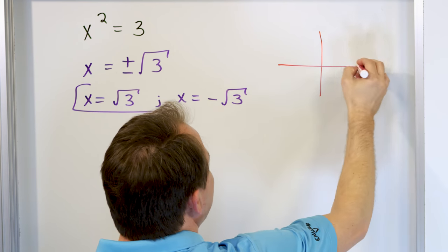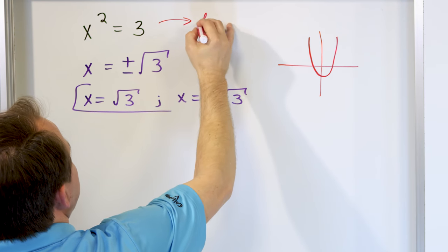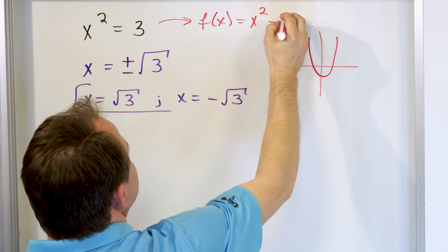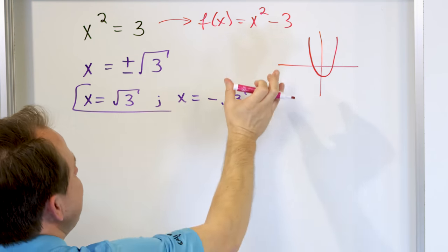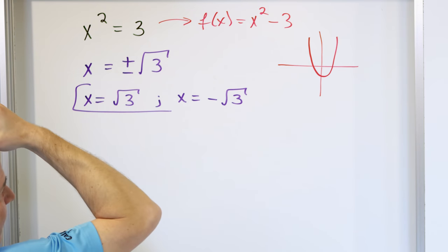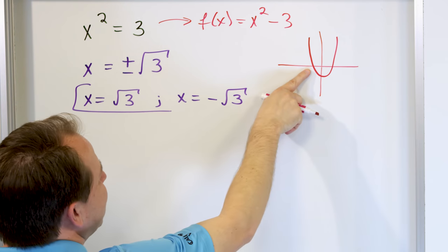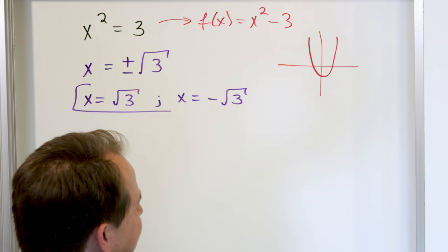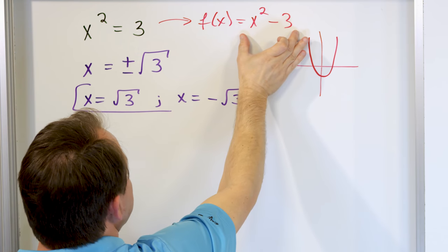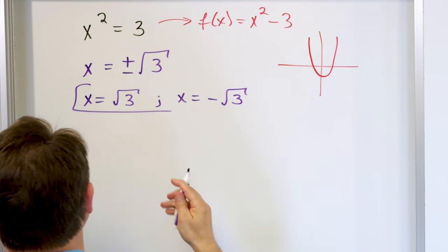If you were to graph this thing, the function f(x) = x² − 3, setting this equal to zero finds the intersection points when the function equals zero. One of them is at positive square root of 3 and the other is at negative square root of 3. In general, when you're solving equations, you can always move everything to one side — that function set equal to zero gives you the intersection points.